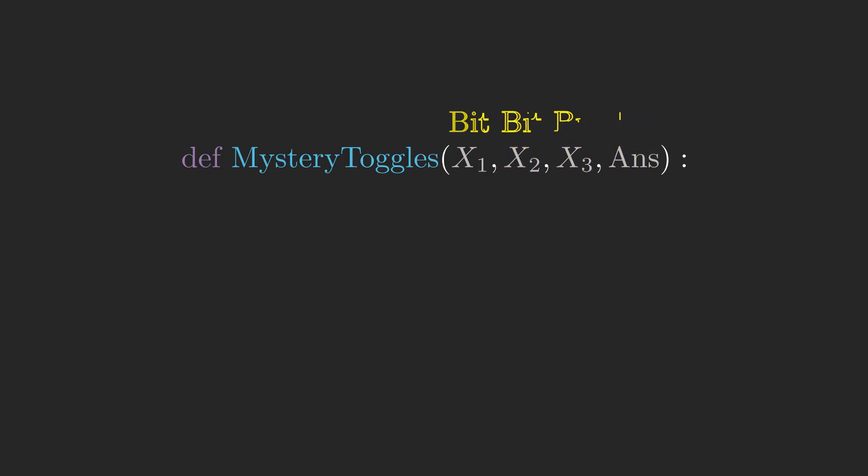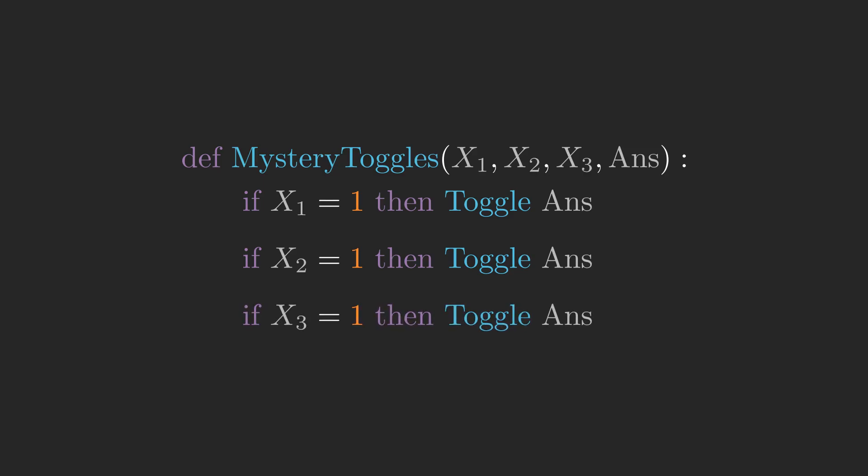The code is as follows: If x1 equals 1, then toggle answer. If x2 equals 1, then toggle answer. And if x3 equals 1, then toggle answer.